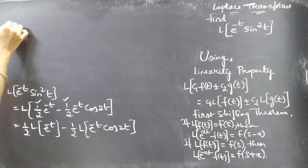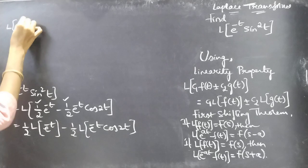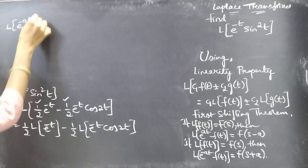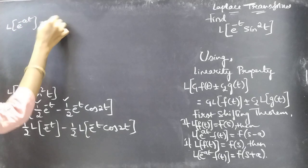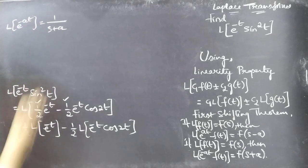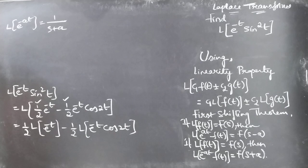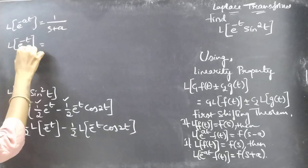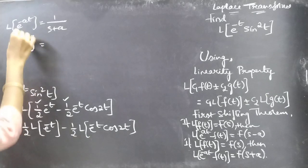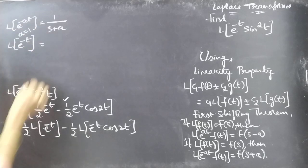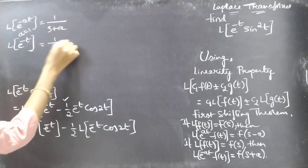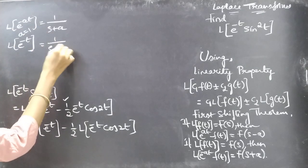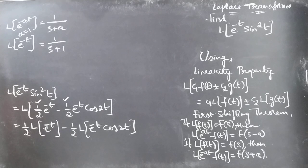Since we know that L of e to the power minus at equals 1 by s plus a, then L of e to the power minus t equals 1 by s plus 1, by comparing and getting a equal to 1.